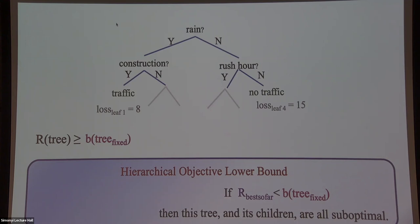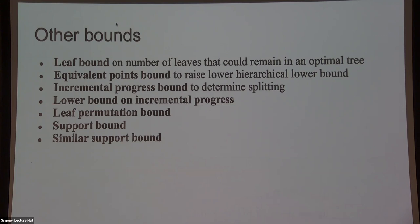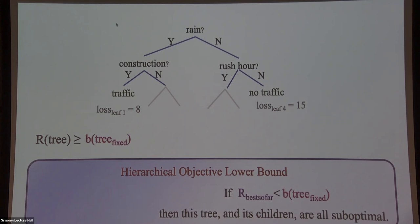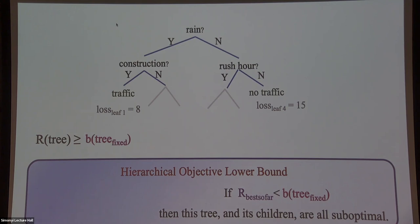There are many such theorems that work together to reduce the search space. The leaf bound tells you how many leaves could remain in an optimal tree. The equivalent points bound: if two points are identical in features but have opposite labels, you must misclassify at least one — knowing this creates better lower bounds. The permutation bound: trees that are permutations of each other with the same leaves are equivalent; you only need to search one representative. The support bound: each leaf must have a minimum number of data points, otherwise you wouldn't bother making that split.